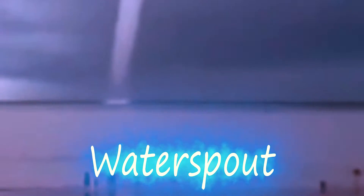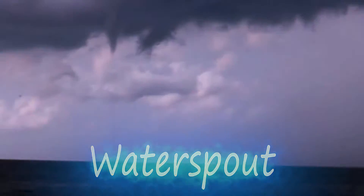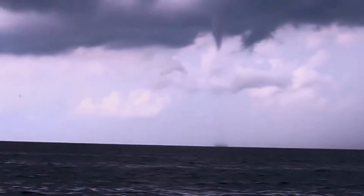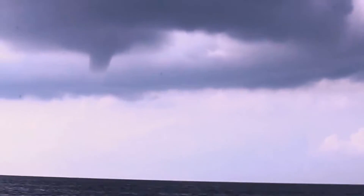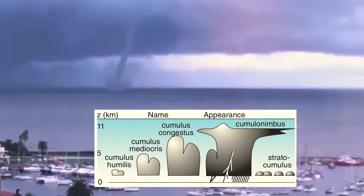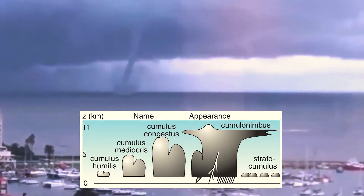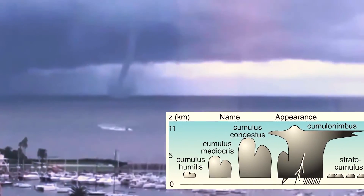A waterspout is an intense columnar vortex, usually appearing as a funnel-shaped cloud that occurs over a body of water. Some are connected to a cumulus congestus cloud, some to a cumuliform cloud, and some to a cumulonimbus cloud.